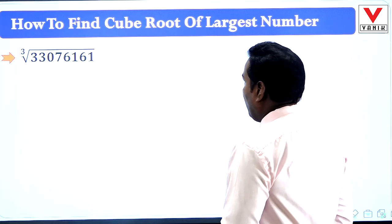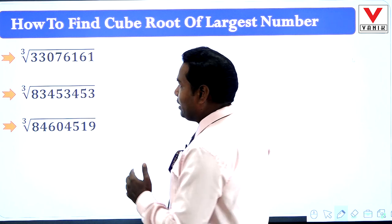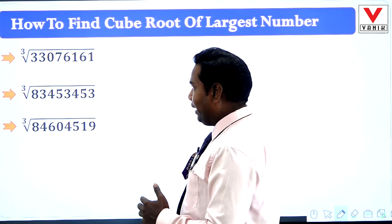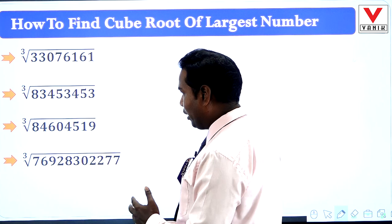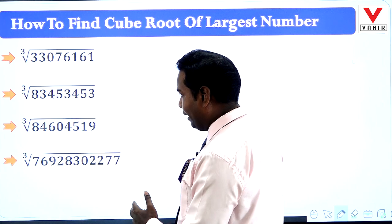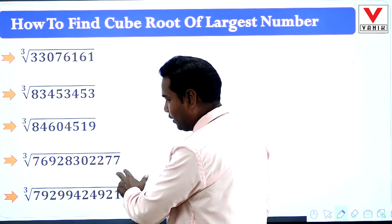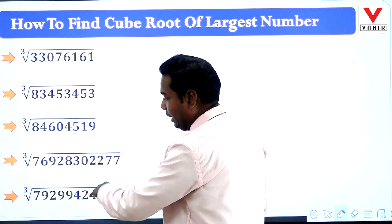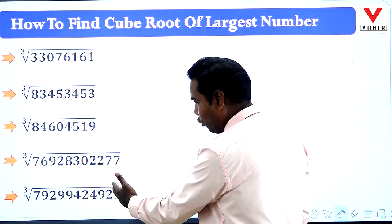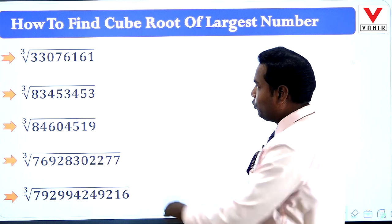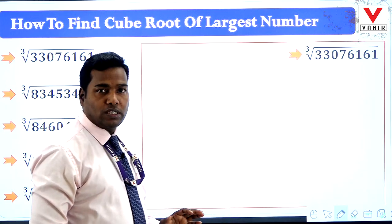Come to the questions. The numbers are: 33076161, 83453453, 84604519, the larger number 76928302277, and the next largest number 792994249216.